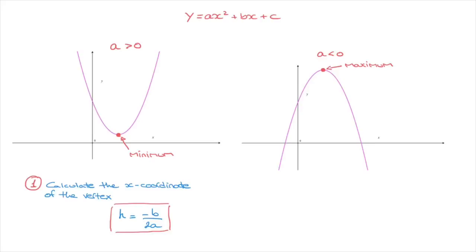In this formula, h simply refers to the horizontal coordinate of the vertex, and b and a are the coefficients that we would find in the parabola's equation. Once we have the horizontal coordinate of the vertex, we move on to step two. In step two, all we need to do is plug the horizontal coordinate back into the parabola's equation, and that will give us the y-coordinate.